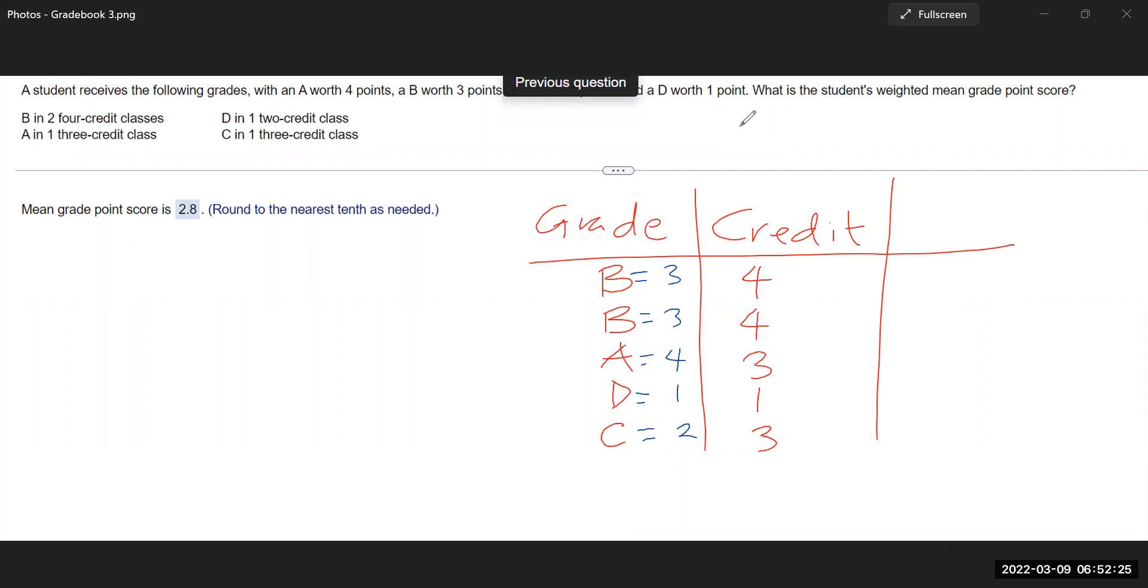Now, let's find quality points. So I'm going to do the quality points. Right there. Now for the quality points, what we're going to do is we're going to multiply each, the value of each letter grade by the corresponding credit.